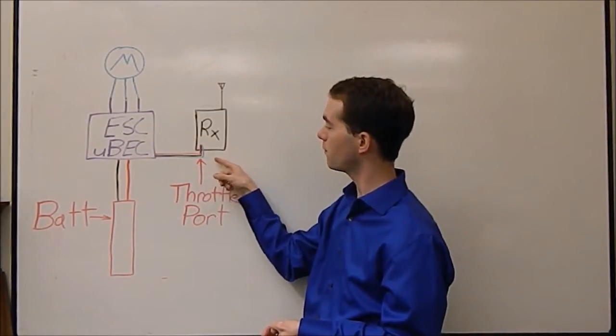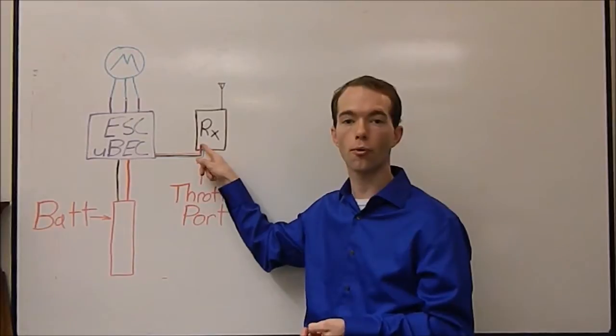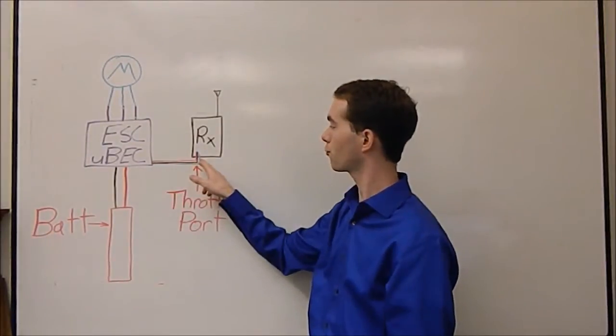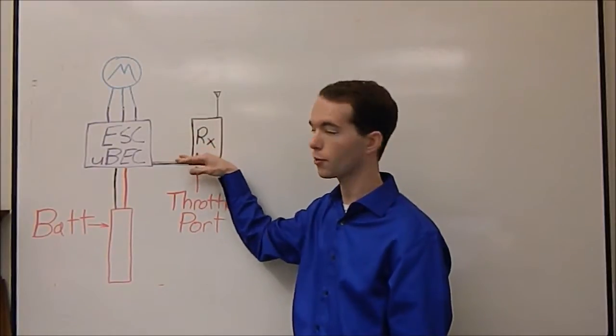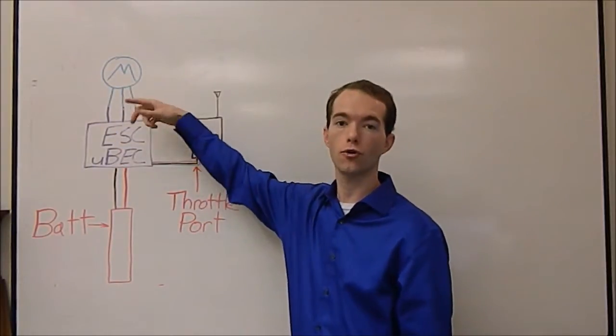So, through the throttle port, you get power to your receiver, and then it also sends the signal from the receiver into the ESC to turn your motor the right speed.